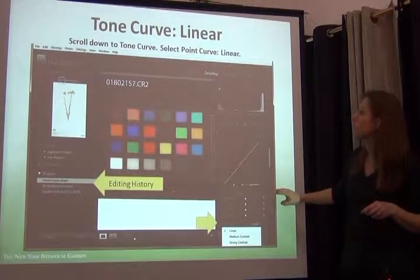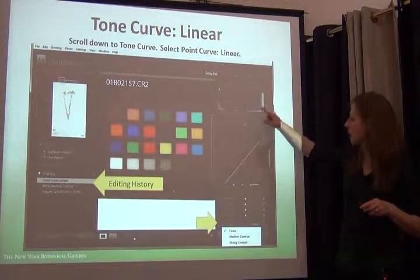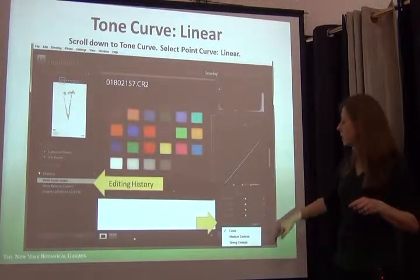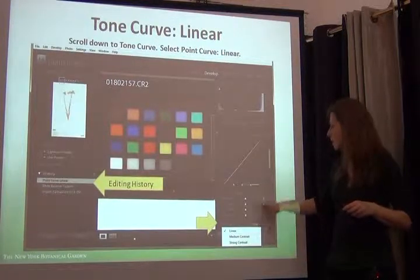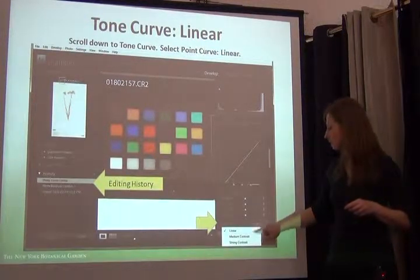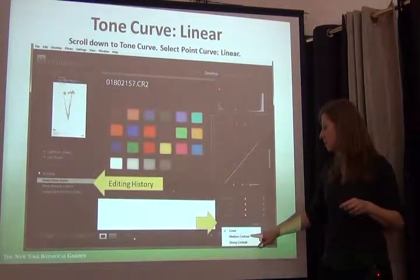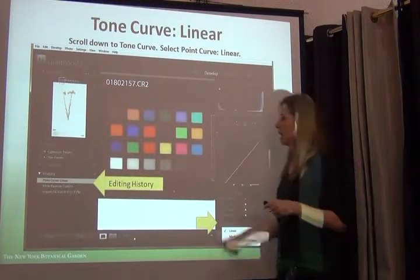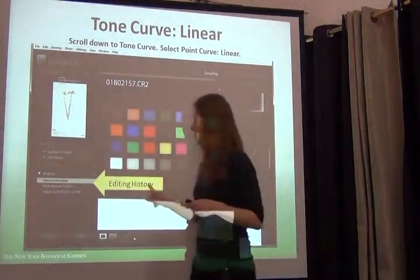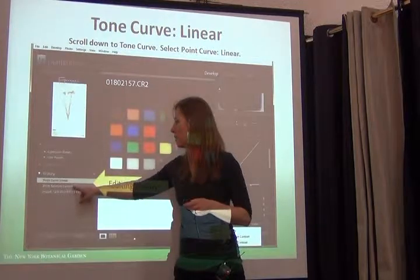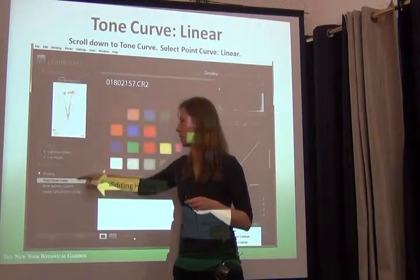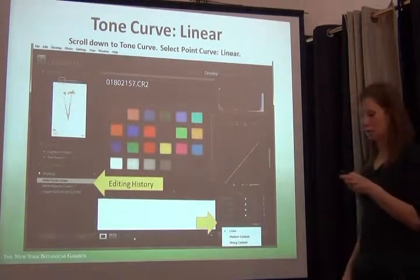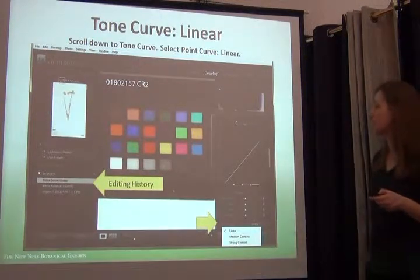Then I adjust the tone curve. Scroll down on the right-hand side and from this dropdown list for the tone curve, select linear. You've got linear, medium contrast, or strong contrast — those are your three options. Notice that I adjusted the white balance after import and I'll see a growing history of all the things I do on this image. I'm only affecting one image right now.